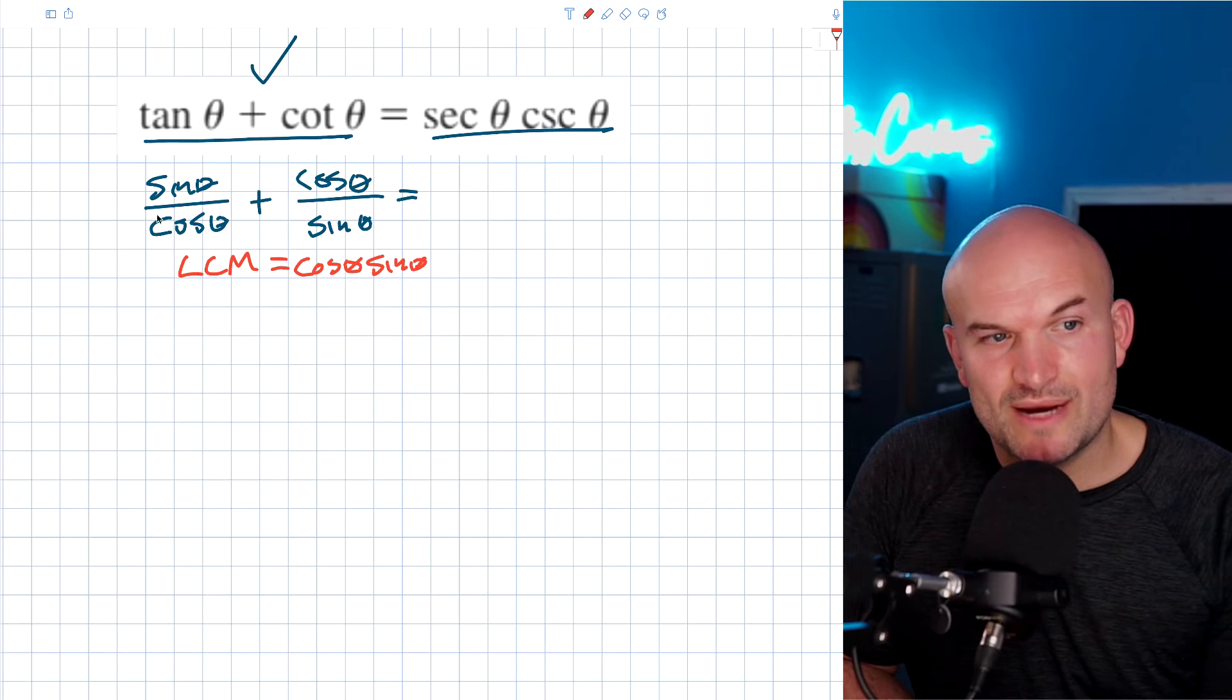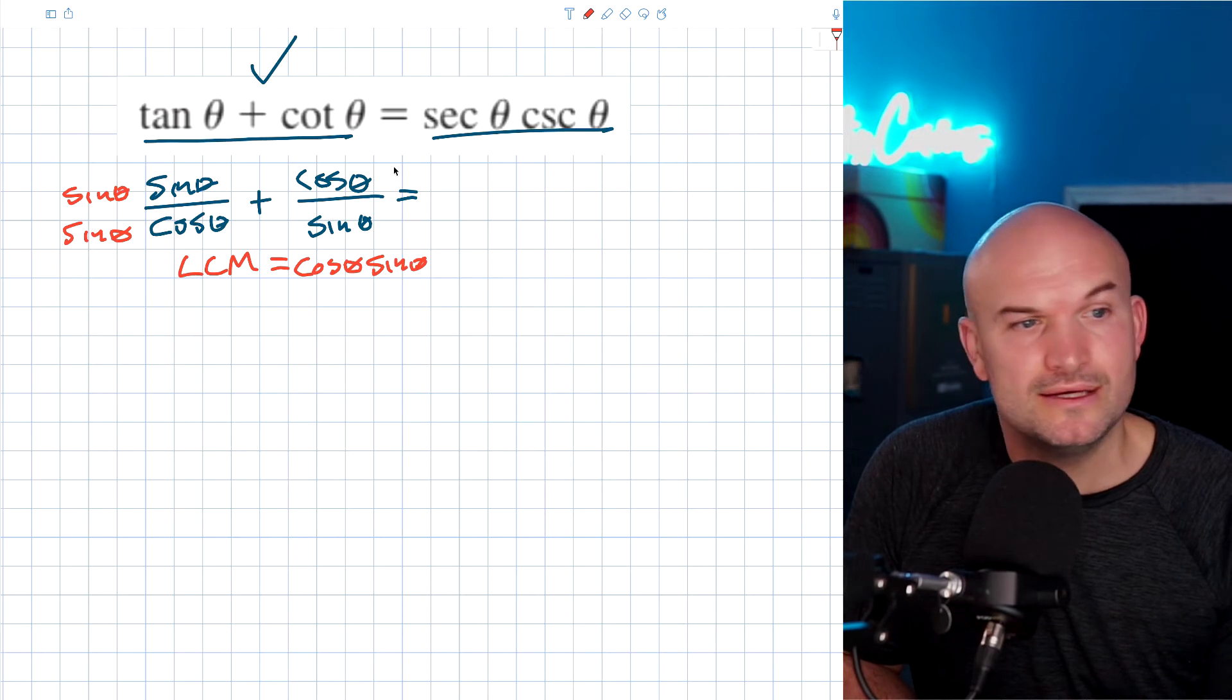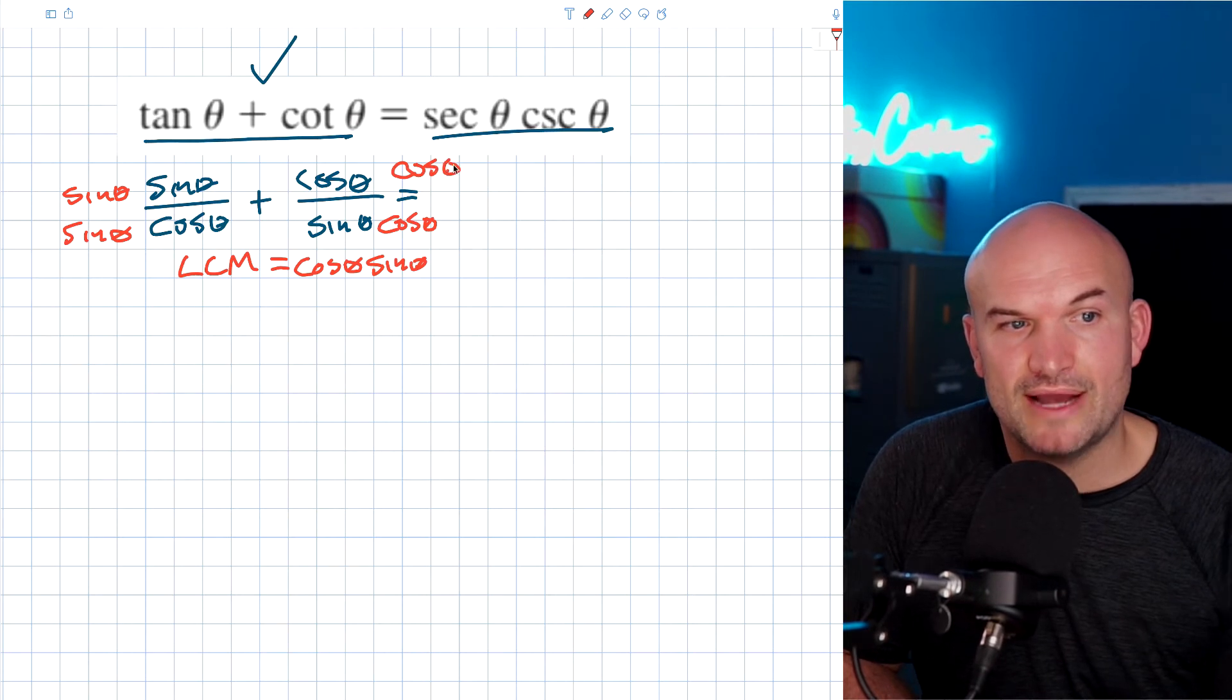So what I'm going to do here is I'm going to multiply on this left-hand side, sine of theta over sine of theta. And on the right-hand side, I'm going to multiply by cosine of theta over cosine of theta.